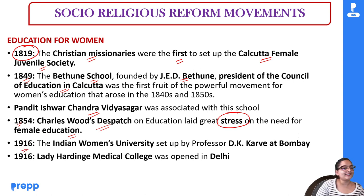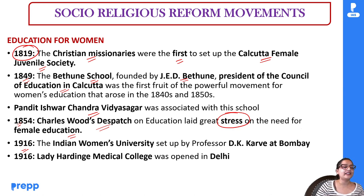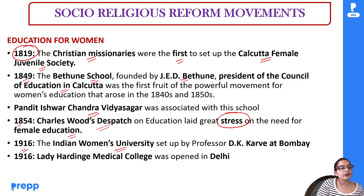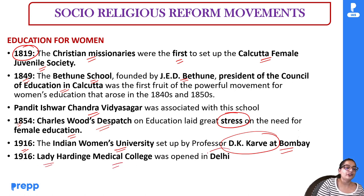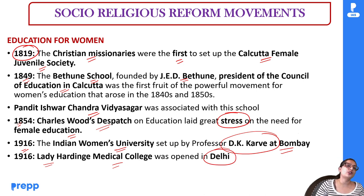In 1916, two major educational institutions were dedicated to women. The Indian Women's University was built in Bombay by D.K. Karve. Next, Lady Hardinge Medical College in Delhi was also established in 1916, both promoting female education at the higher education level.